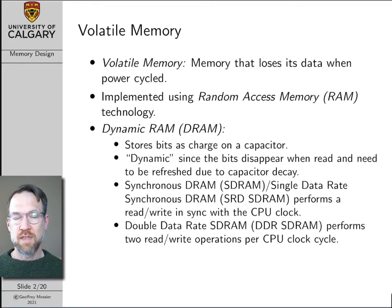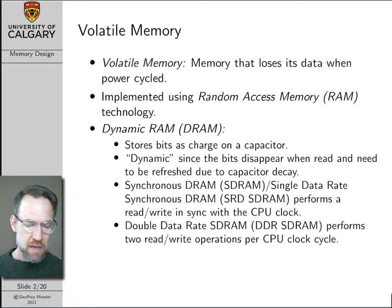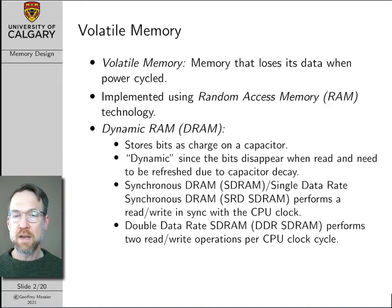The reason DRAM is called 'dynamic' is that bits stored in DRAM disappear when you read them. Basically, you charge up a capacitor to represent a one, but when you read that capacitor, the charge flows off and the memory disappears. It's kind of complicated to design the circuits to make DRAM work. Synchronous DRAM, or single data rate DRAM, performs a read and a write in sync with the CPU clock, and synchronous memory is the kind we're going to explore in detail.